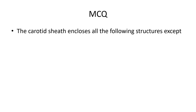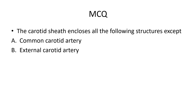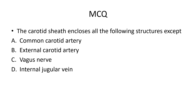MCQ: The carotid sheath encloses all of the following structures except: A) common carotid artery, B) external carotid artery, C) vagus nerve, D) internal jugular vein. The answer is B — the external carotid artery — because it pierces the carotid sheath and comes out. The internal carotid artery, as the continuation of the common carotid artery, is a content of the carotid sheath. Thank you.